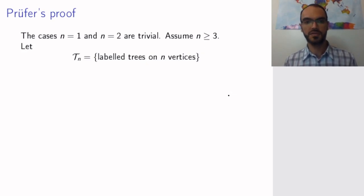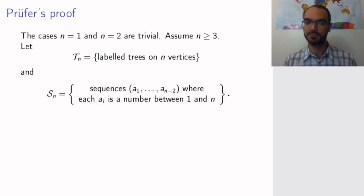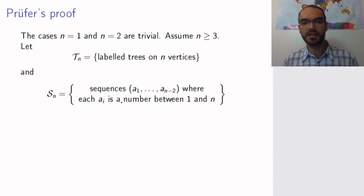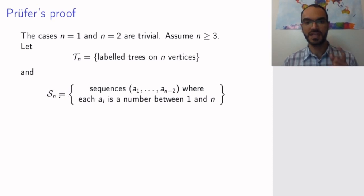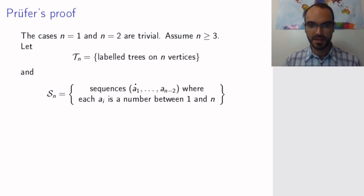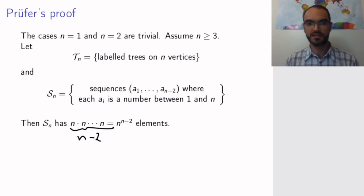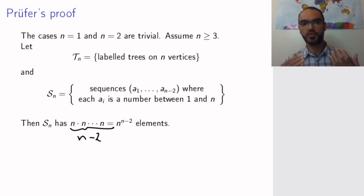So how are we going to do this? Let's call the set of all labeled trees on n vertices T_n. This is the set that we want to count. Let's define a different set that has nothing to do with trees: the set of all sequences a1 to a_{n-2}, so sequences of length n minus 2 where each a_i is a number between 1 and n, called S_n. The set S_n has n to the power n minus 2 elements, since we can choose each a_i in n ways and there are n minus 2 of them.